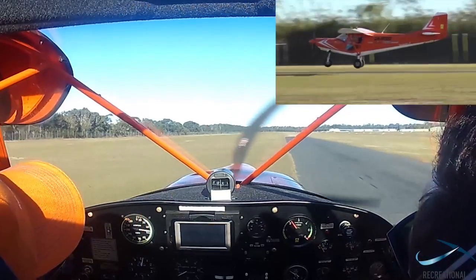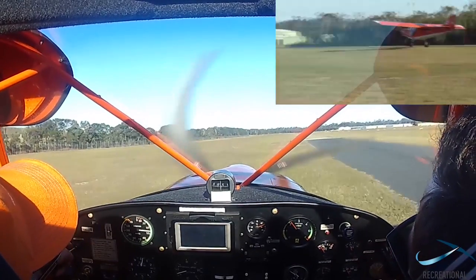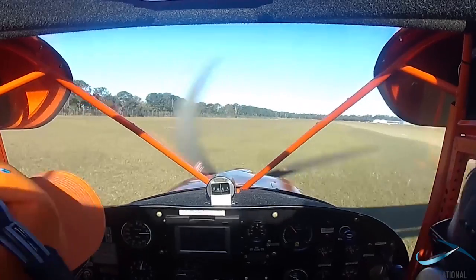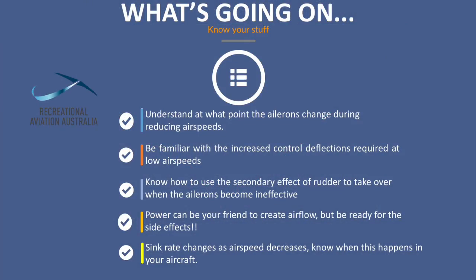We also need to understand at what point in the airspeed equation the sink rate substantially changes. In some of our modern high-performance recreational aircraft, once you get below 55 to 60 knots, the sink rate actually increases substantially. It's important that the pilot knows where that happens for any particular aircraft — a good instructor will point this out when converting you to type. Added to a wind gradient effect, this could be a substantial recipe for a poor landing or a runway loss of control event if you don't know where that threshold is.